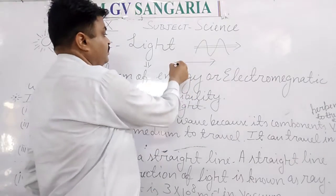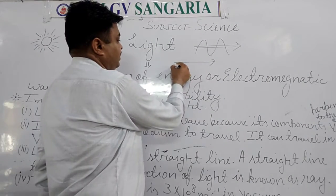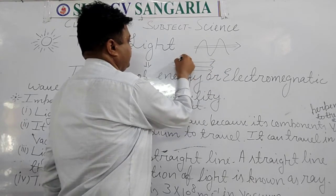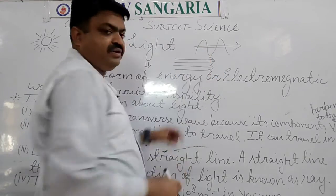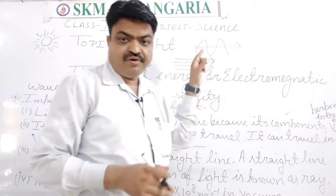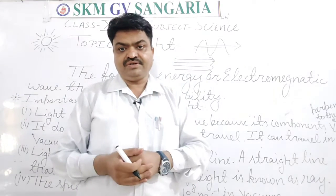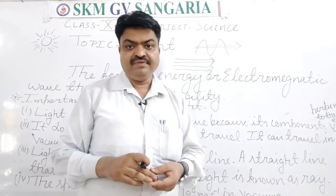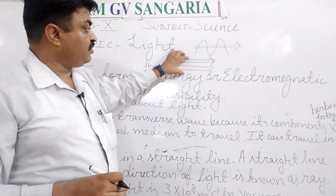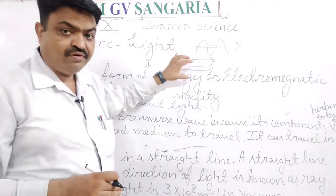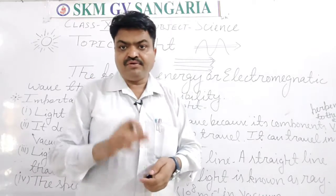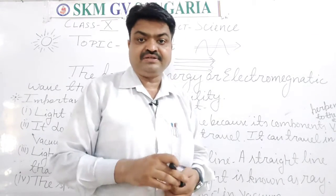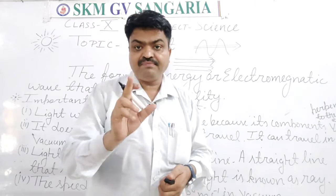When a group of rays of light is formed together, that group is known as the beam of light. When there is a collection of rays of light, that collection is known as the beam of light.